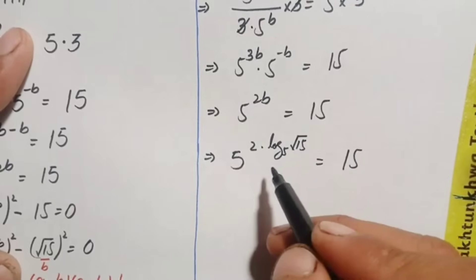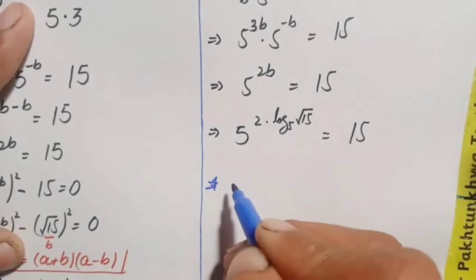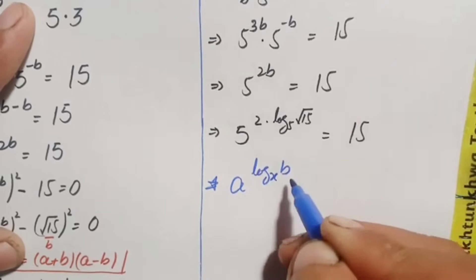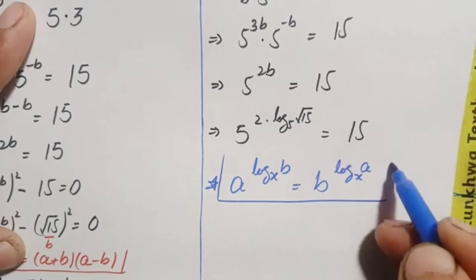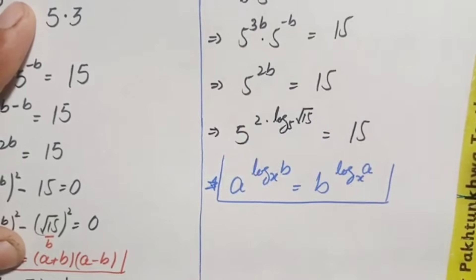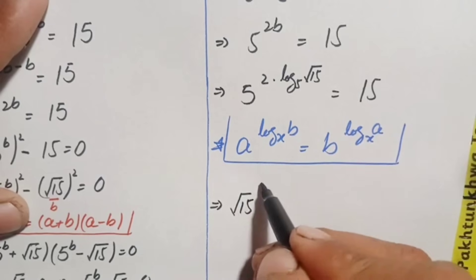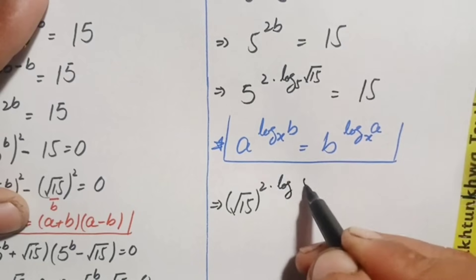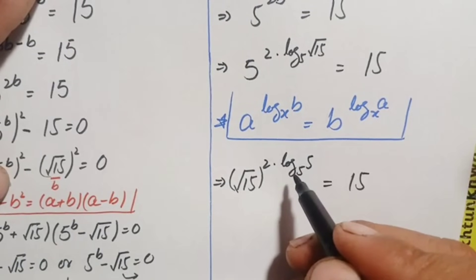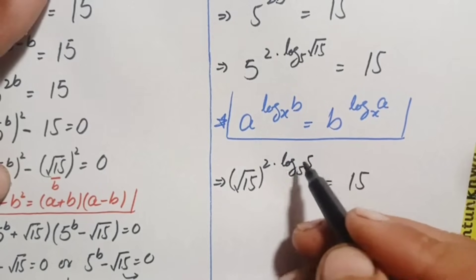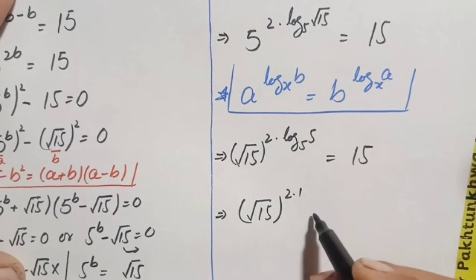In the left hand side we use the logarithm result: a raised to power log of b with base x equals b raised to power log of a with base x. Using this result, we interchange the position of 5 and square root of 15. The left hand side becomes square root of 15 raised to power 2 times log of 5 with base 5, equals 15. Since log of any number with the same base equals 1, log of 5 with base 5 equals 1, and we replace it with 1.